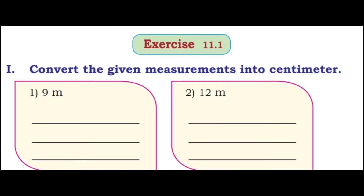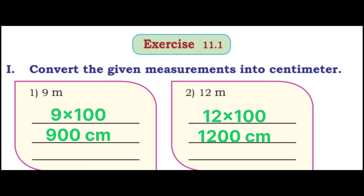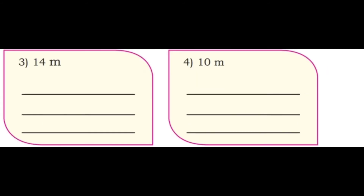Let's see the exercise 11.1. First part: convert the given measurements into centimeter. First one: 9 meter — 9 into 100 — that is 900 centimeter. Second one: 12 meter — 12 into 100 — that is 1,200 centimeter. Third one: 14 meter — 14 into 100 — that is 1,400 centimeter.